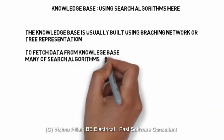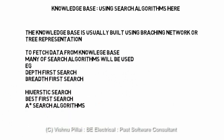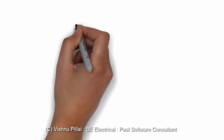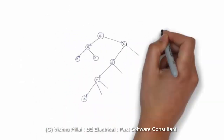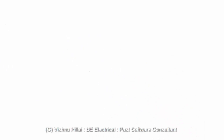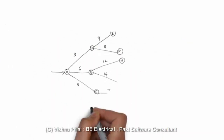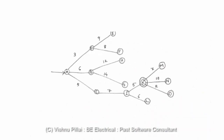The knowledge base is usually built using a branching network or tree representations. To fetch data from the knowledge base, various search algorithms are used — such as depth-first search, breadth-first search, heuristic search, and best-first search. One method to store knowledge is using if-then rules; another is using tree structures. These algorithms are used to fetch knowledge from the knowledge base and derive solutions to various problems.